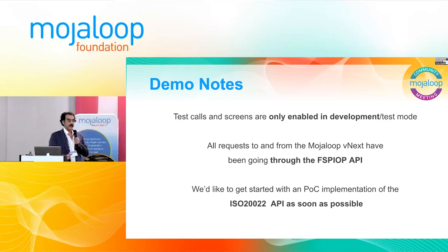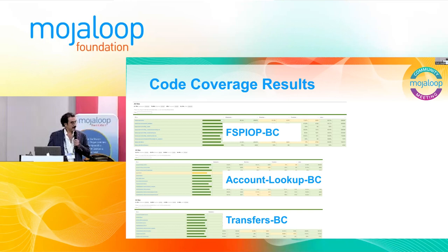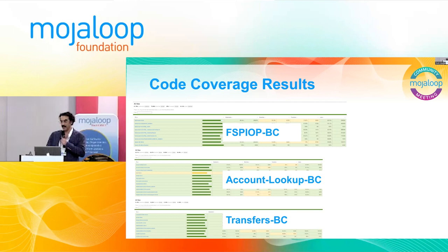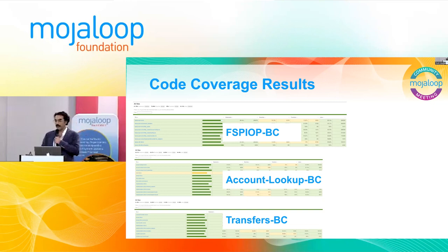This is code coverage results. I have to say I'm showing the best ones, but that's life. These three FSPI-OP bounded contexts — account lookup and transfers — have more than 90% code coverage of lines, functions, and statements. There are a few in the 70s and some we need to keep working on. All of these code coverage results are automatically published in CircleCI as part of our CI/CD pipeline — every time we push new code, they get tested and the results get published.